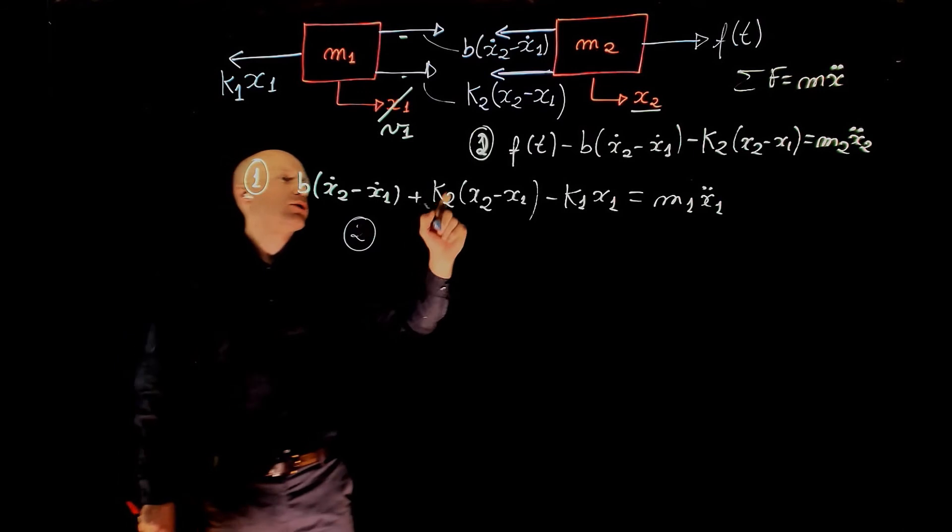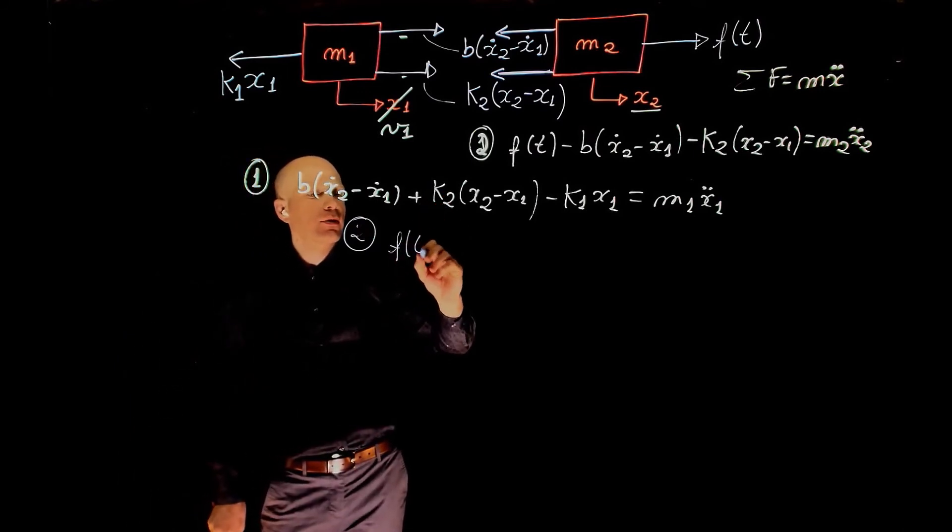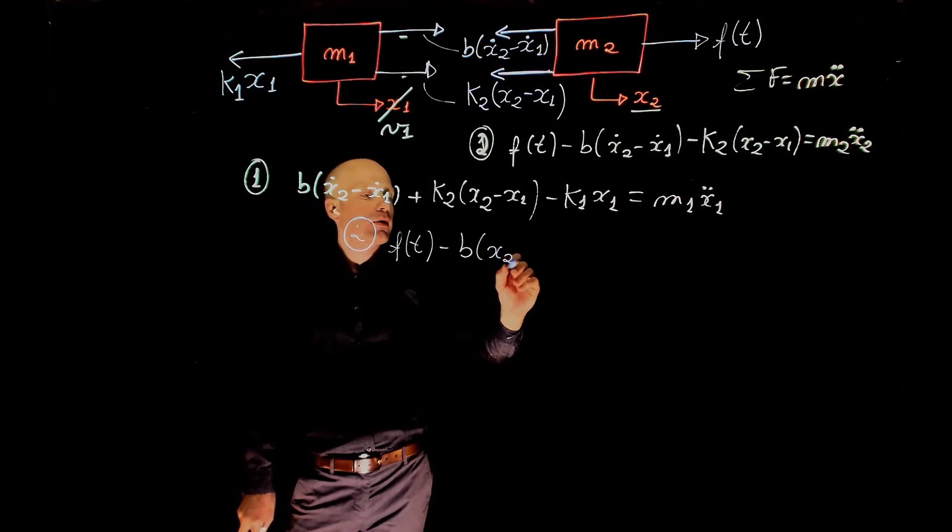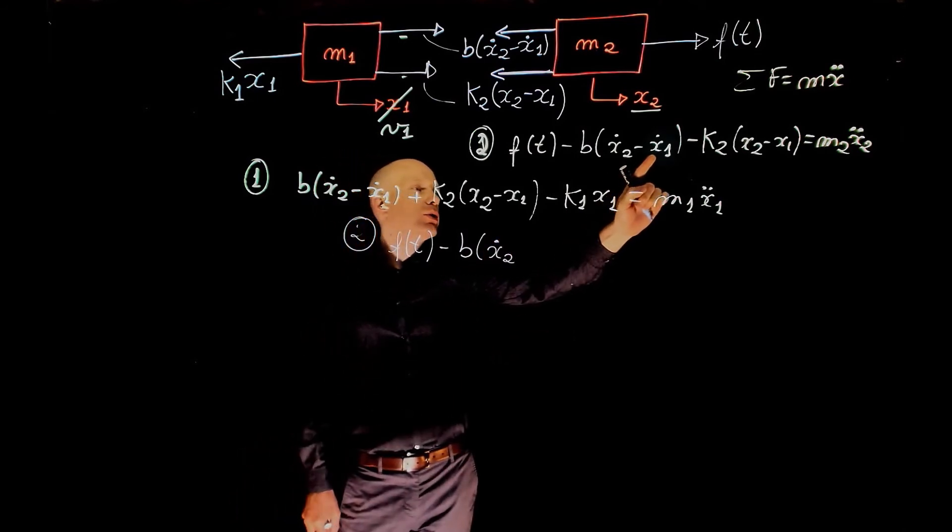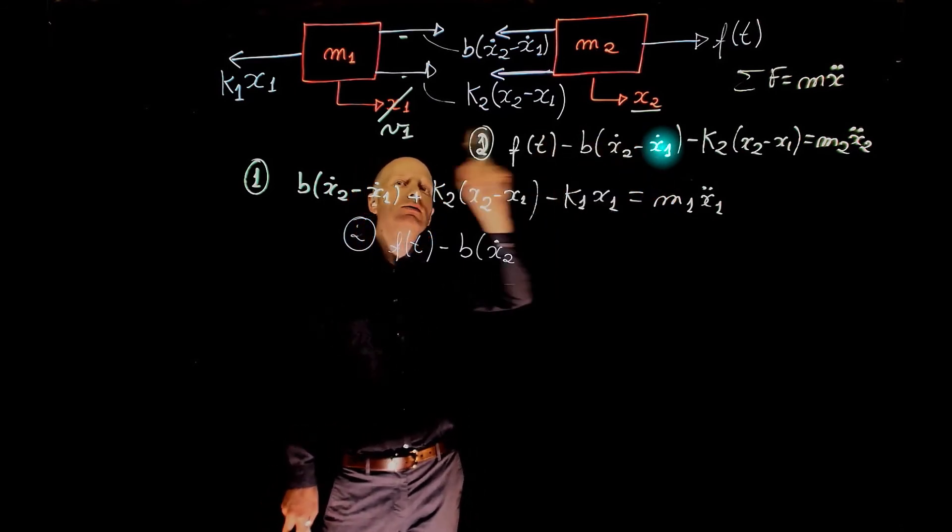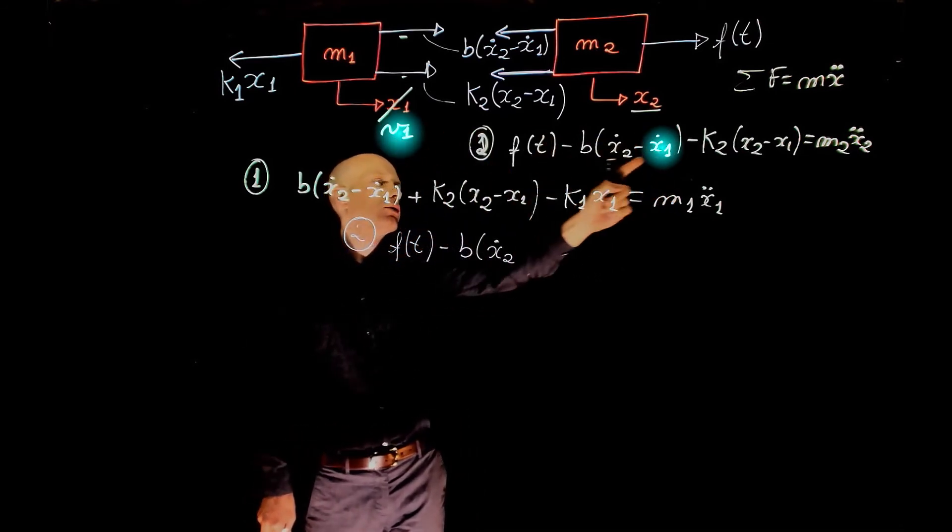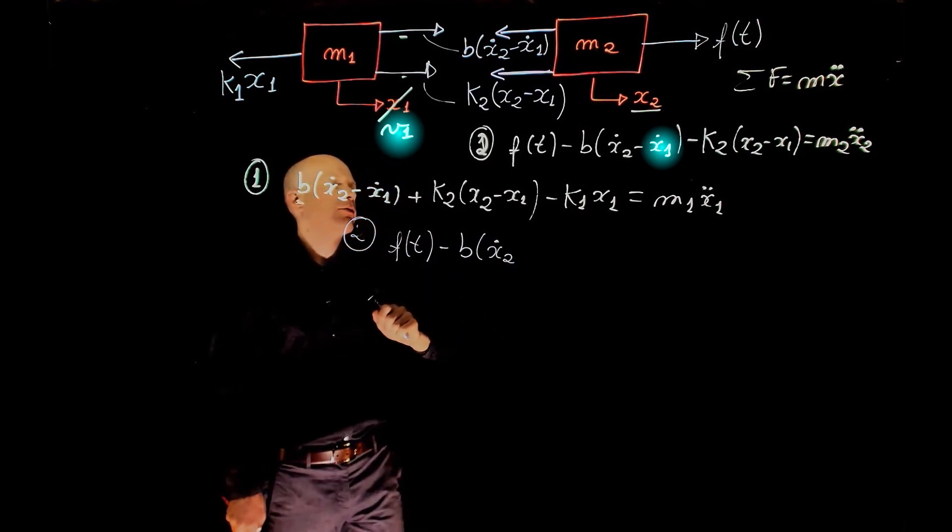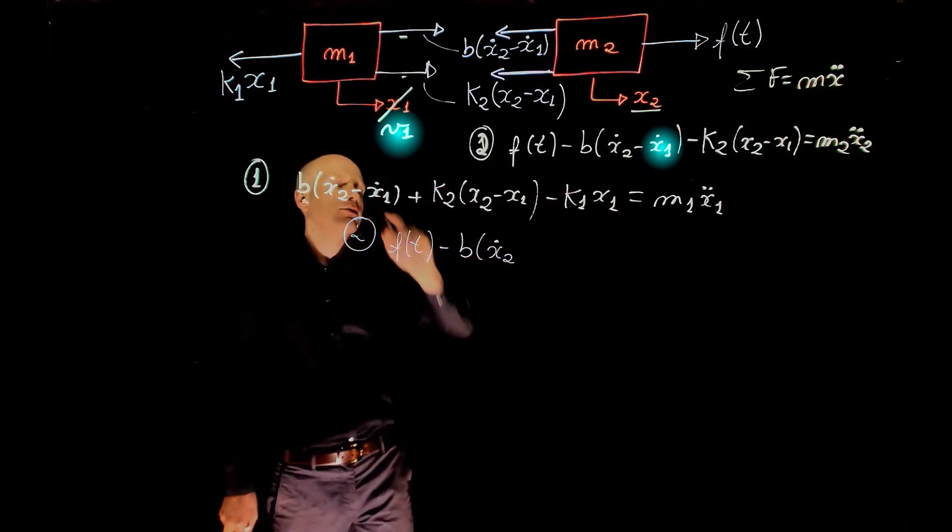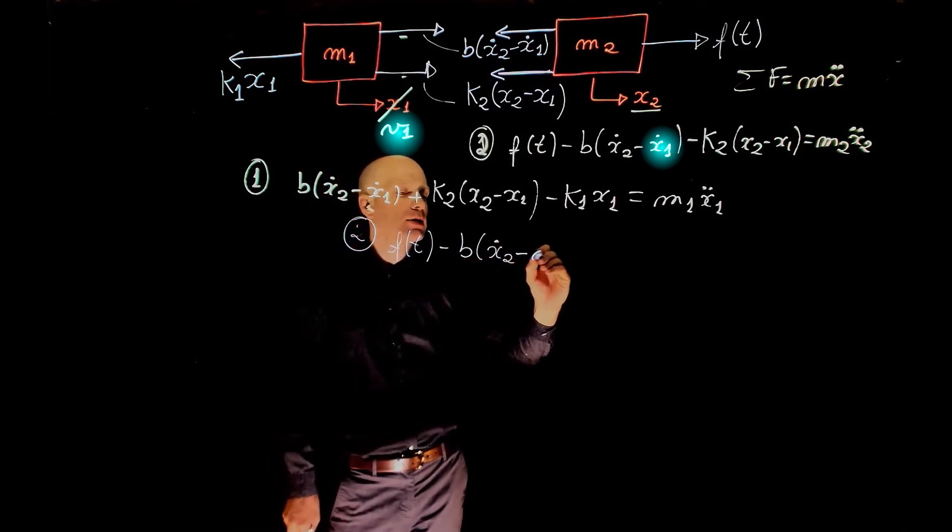Equation 2 could be rewritten as f of t minus b x2 dot. Now here we have x1 dot. x1 dot is the velocity, V1 dot represents the first derivative of x with respect to time. So the derivative of position is velocity, so we could simply write minus V1.